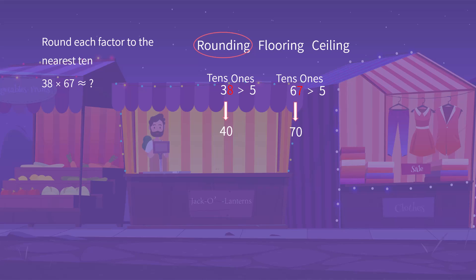Now we have a simple calculation. We just need to find the product of 40 times 70. By using the technique of multiplying a whole number by the powers of 10, we get 2,800 as our product. Thus, Uncle Josh earned around $2,800 by selling jack-o'-lanterns.